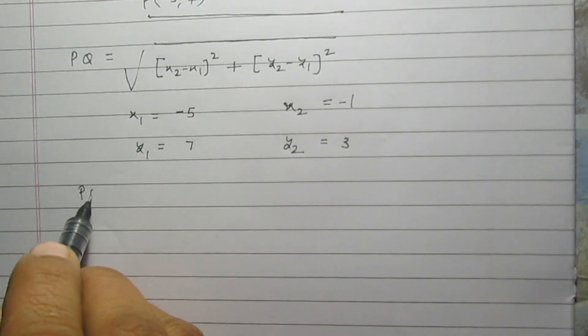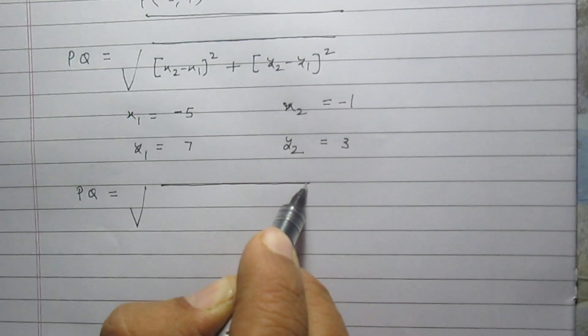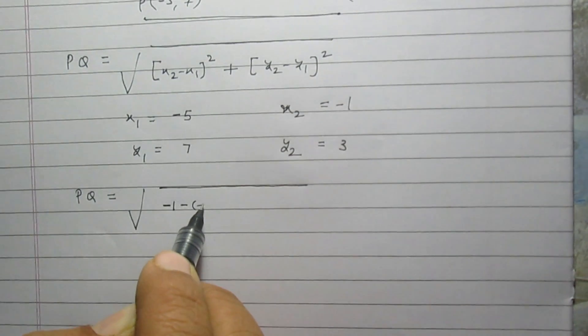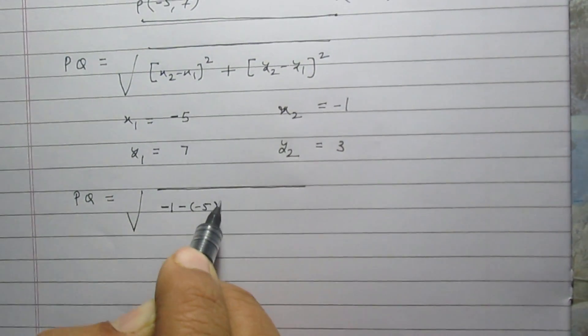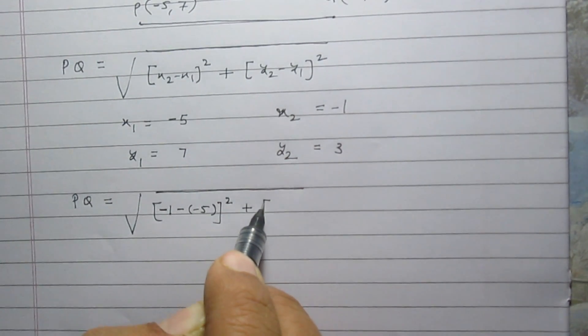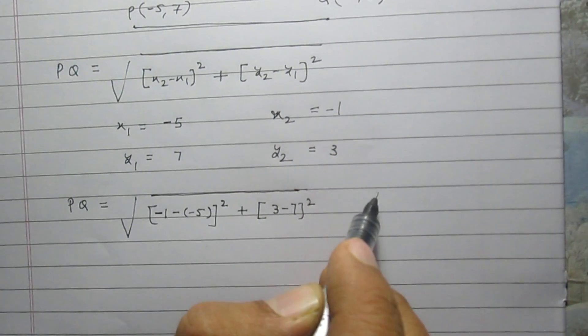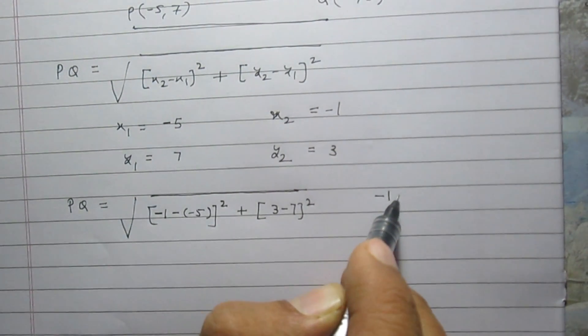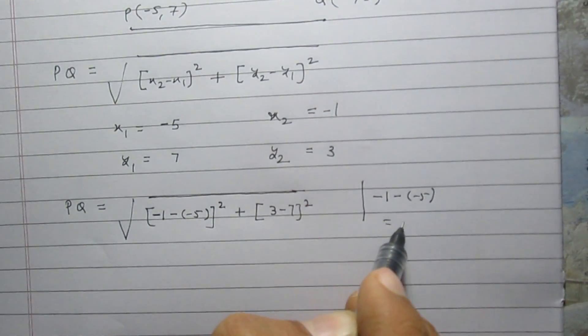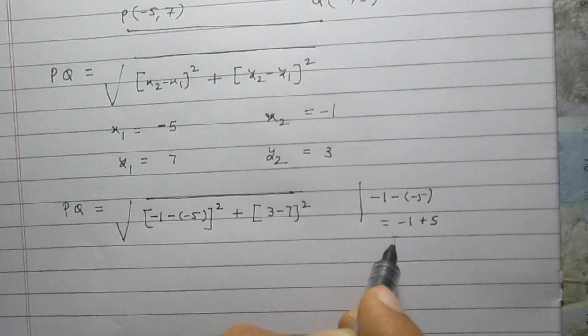we get PQ is equal to the square root of [(-1) - (-5)]² plus (3 - 7)². -1 minus (-5), we get -1 + 5, and further it is 4.